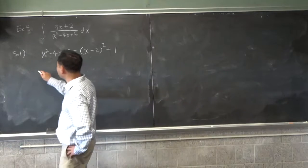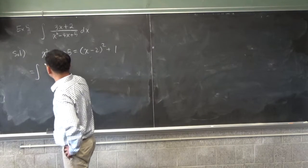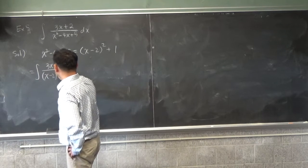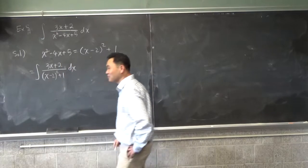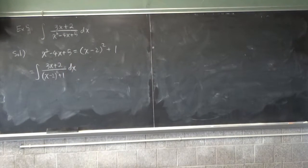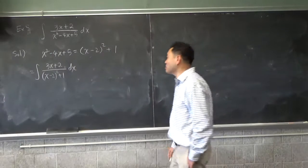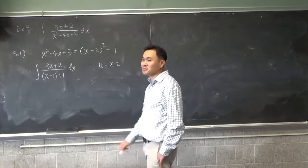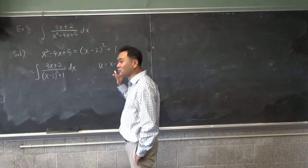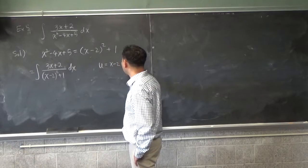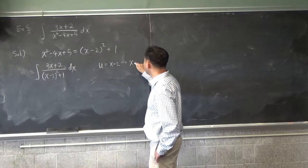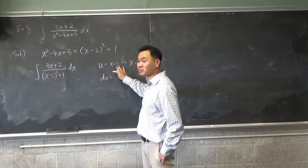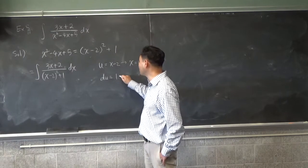And therefore, we can integrate this one. And then the next best thing you can do is you just set u as x minus 2. Okay, and therefore, let's see. If u is x minus 2, then x is u plus 2. And then du is the derivative of x minus 2, which is 1, so 1 dx.